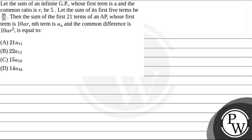Hello! Let's read this question. The question says: let the sum of an infinite GP whose first term is A and the common ratio is R, be 5. Let the sum of its first five terms be 98 by 25.